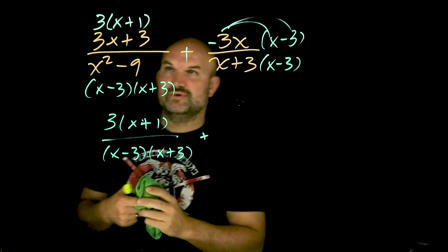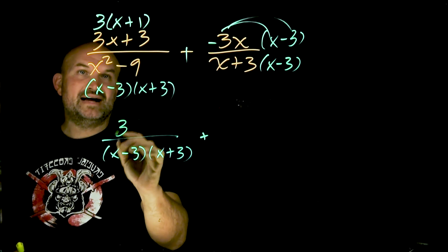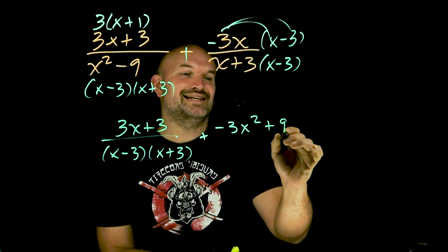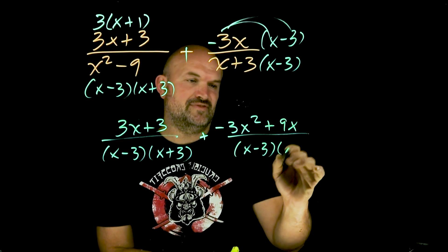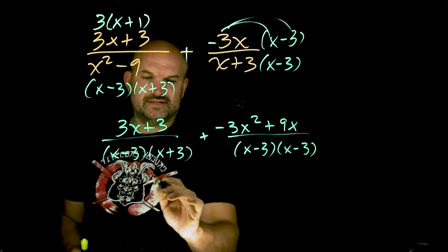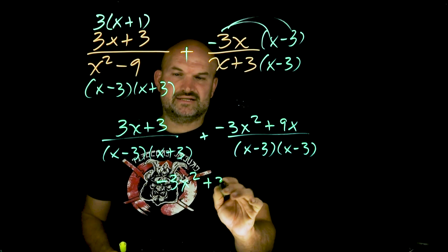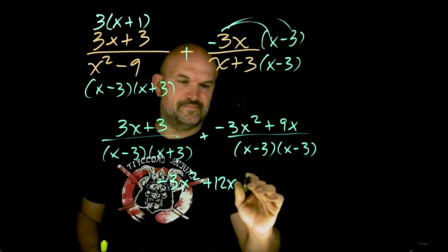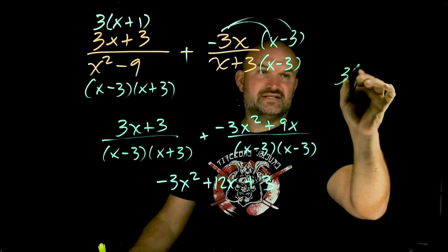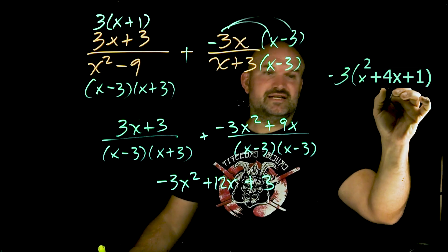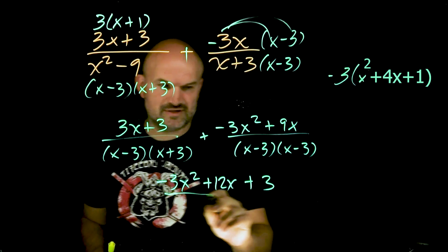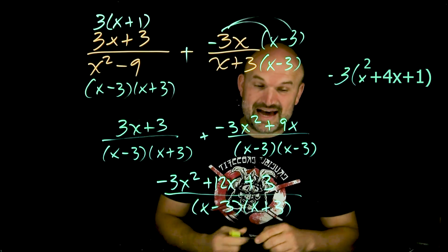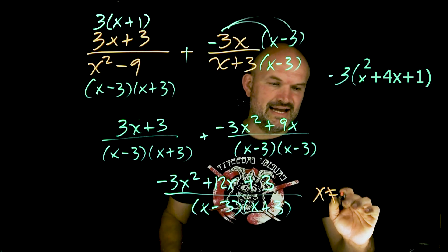I'm going to rewrite the expression back without the factored numerator since nothing divided out. Applying the distributive property with the negative gives −3x² and then positive 9x, all over the common denominator (x−3)(x+3). Combining terms gives −3x² plus 12x plus 3. Factoring out a negative 3x gives −3x(x²−12x−3), which is not factorable further, times (x−3)(x+3). The excluded values are x cannot equal positive three and x cannot equal negative three.